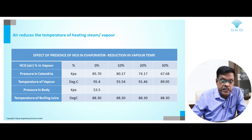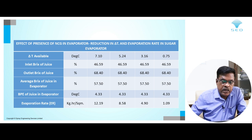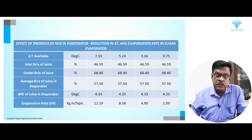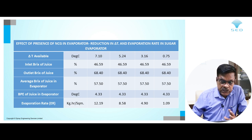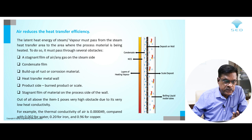Looking at the effect on evaporation rate and delta T: at 0 percent NCG, the available delta T is 7.1. At 10 percent it becomes 5.2, at 20 percent it becomes 3.16, and at 30 percent it becomes 0.75. The evaporation rate stands at 12.19 kg per square centimeter at zero NCG, but at 30 percent NCG it drops to 1.9 — almost coming to a halt. NCG totally spoils evaporation in your evaporator.